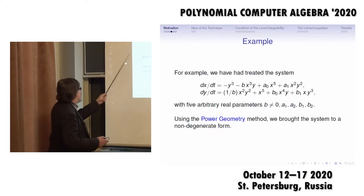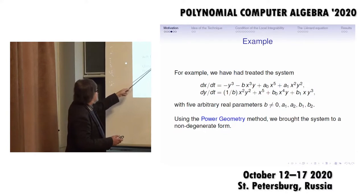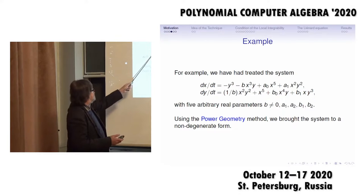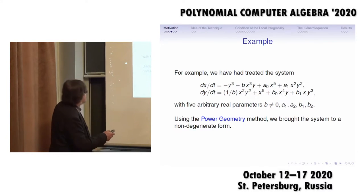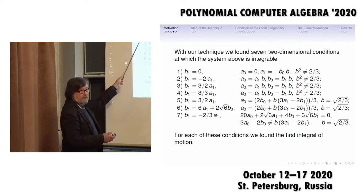For example, in a previous paper we saw a degenerate system. This system has five real parameters, and we used power geometry method to reduce the system to one with near-pattern part. We used our technique for investigation of this system and found seven relations on the parameters at which the system is integrable, and we found solutions for these seven relations on the parameters.